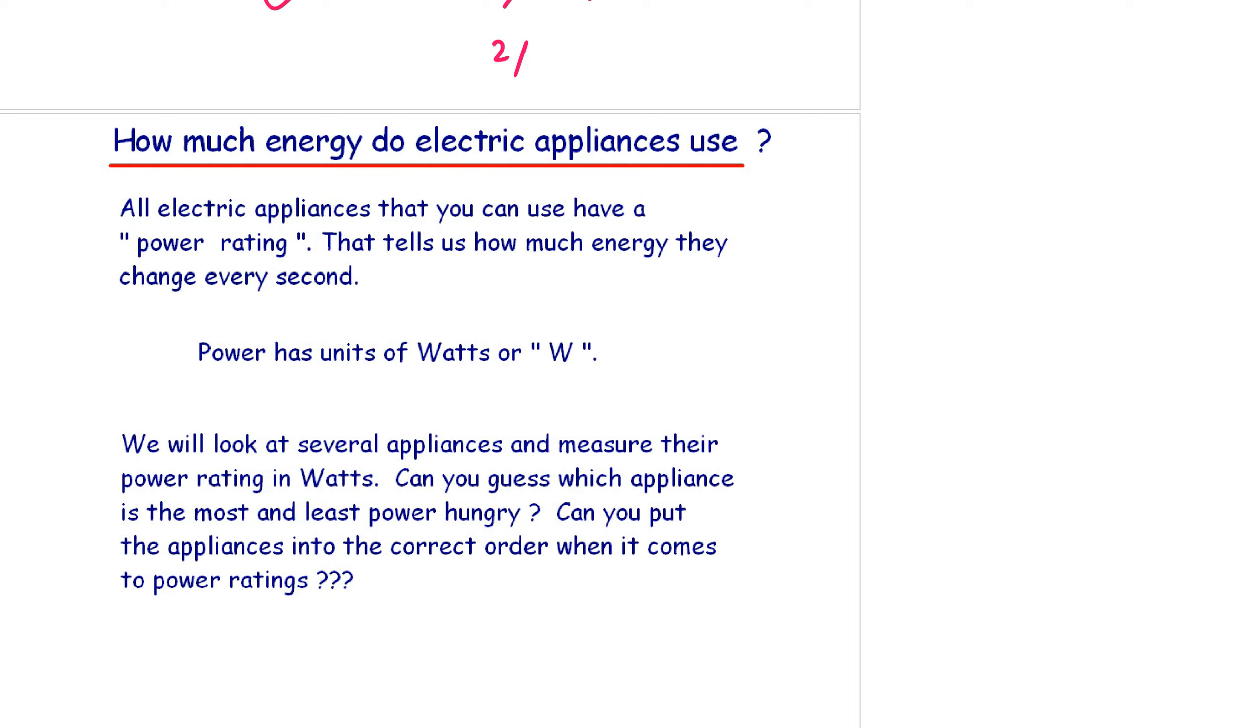The units for power is the watt or watts. You probably know people that are stronger physically and weaker than you. Well, it's exactly the same with appliances. Some appliances use a lot of electricity whereas others use hardly any at all. We're going to look at several appliances and measure their power rating in watts. What I'd like you to do is have a guess at which one has the most and the least power hungry. Can you put the appliances into the correct order?